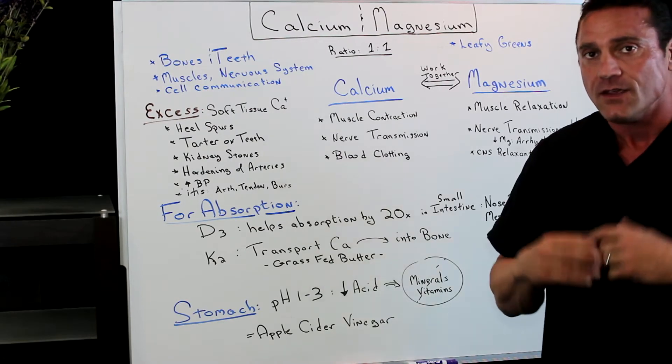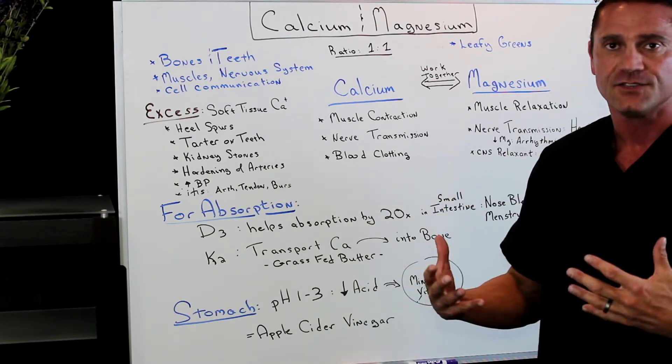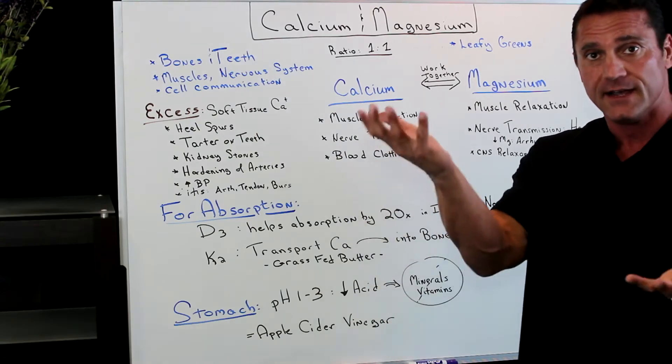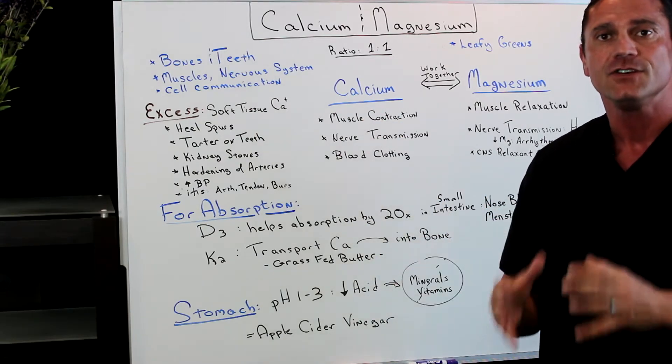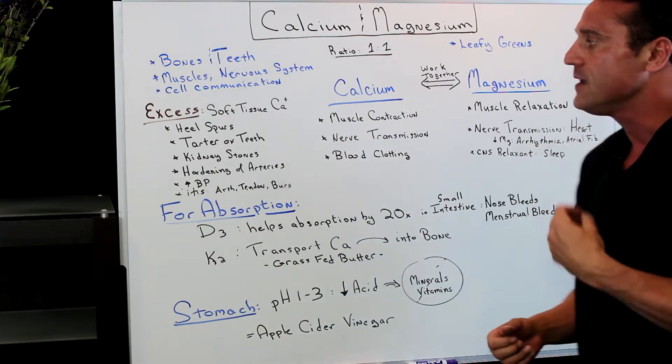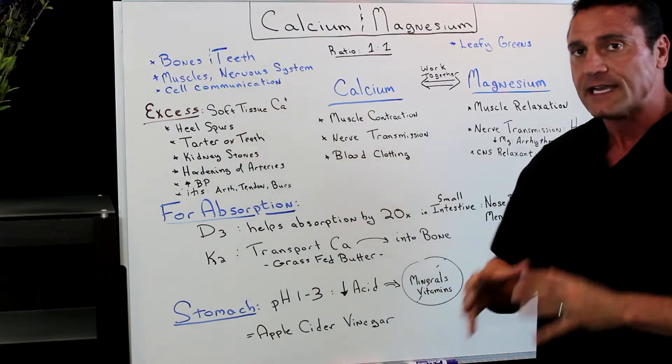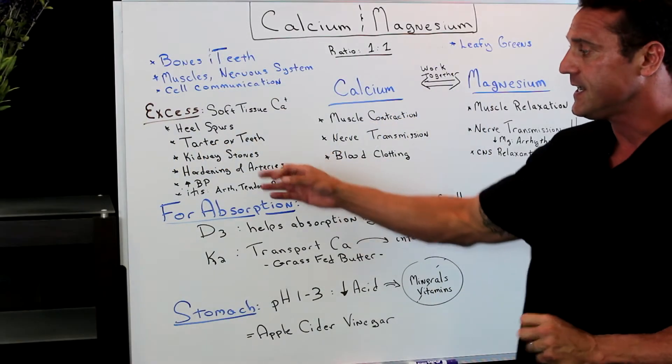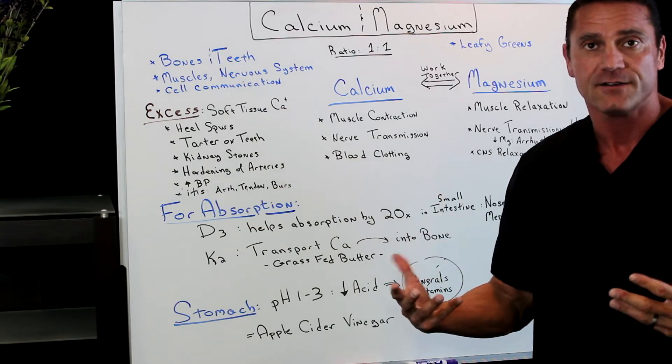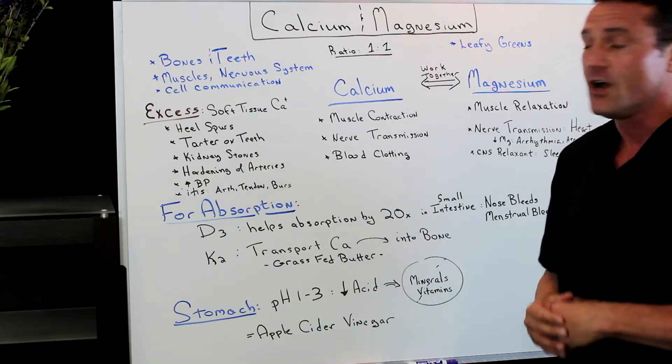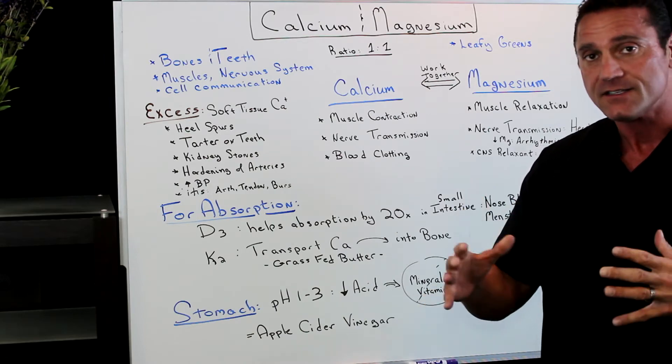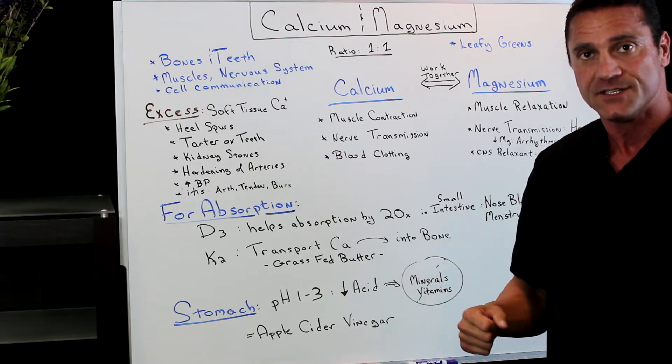If you're taking in too much calcium, now again, calcium and magnesium should be taken together because they work opposing each other. However, if you have too much calcium in your system, excess calcium, it leads to soft tissue calcification. Heel spurs, tartar on the teeth, kidney stones, hardening of the arteries, increased blood pressure, all the itises, arthritis, bursitis, tendonitis, that's all due to too much calcium in your system.